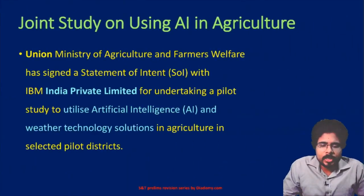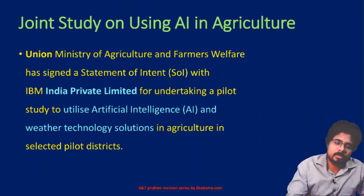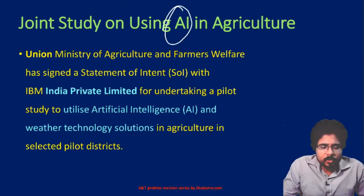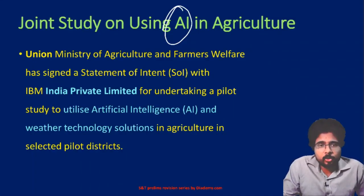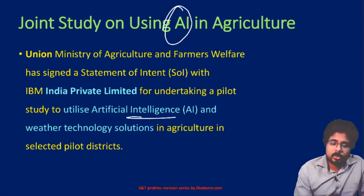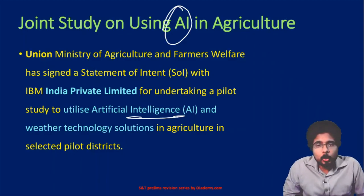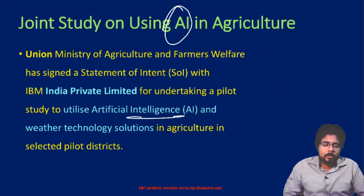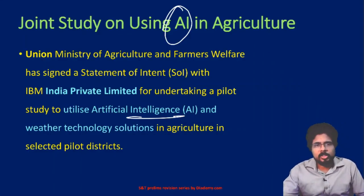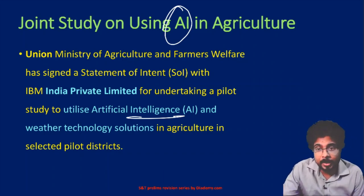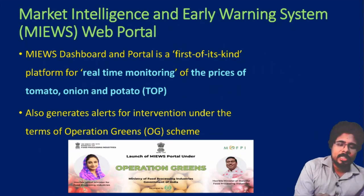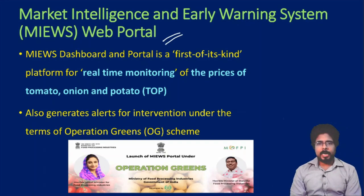Next, the joint study on using AI in agriculture. Artificial intelligence in agriculture is a very new and important area. The Union Minister of Agriculture and Farmer Welfare has signed a statement of interest with IBM for undertaking a pilot study to use artificial intelligence and weather technology solutions. Using AI, they will be able to provide solutions for weather changes and related challenges. This will be implemented as a pilot project in a few districts.